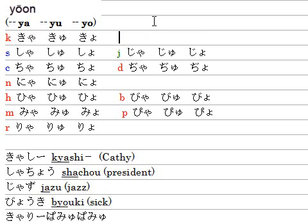And bya, byu, byo. And pya, pyu, pyo — pya is typed P-Y-A, pyu is P-Y-U, pyo is P-Y-O, giving you pya, pyu, pyo.